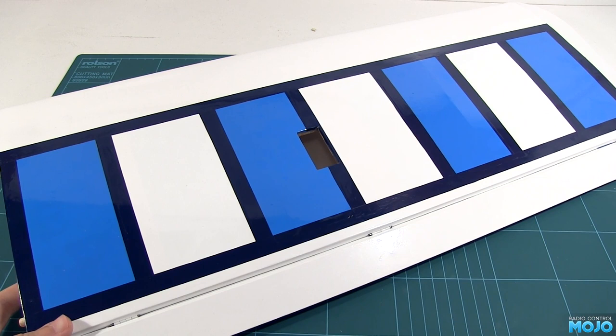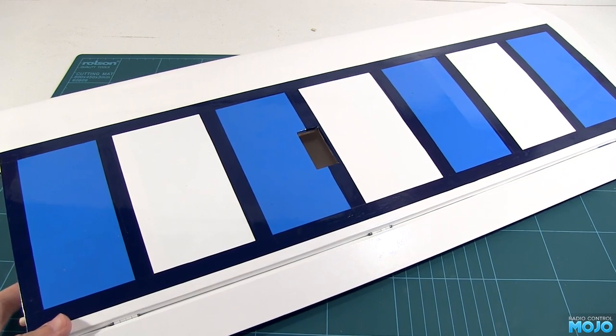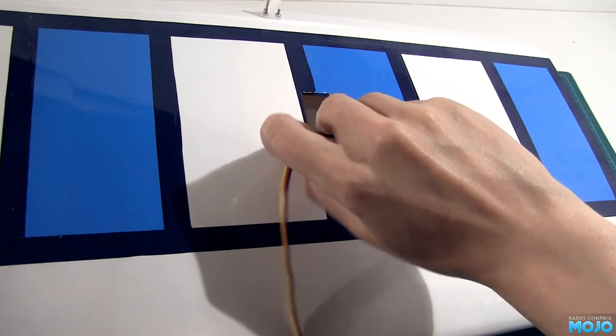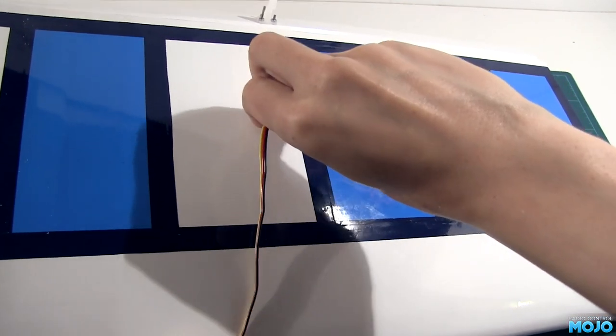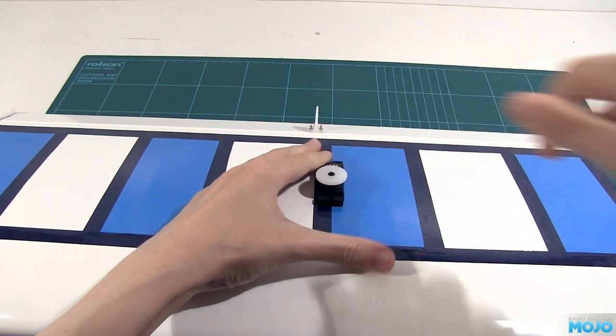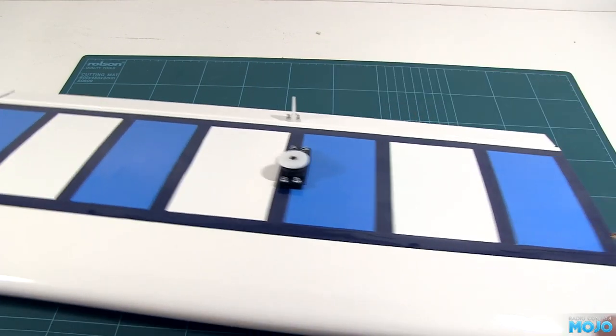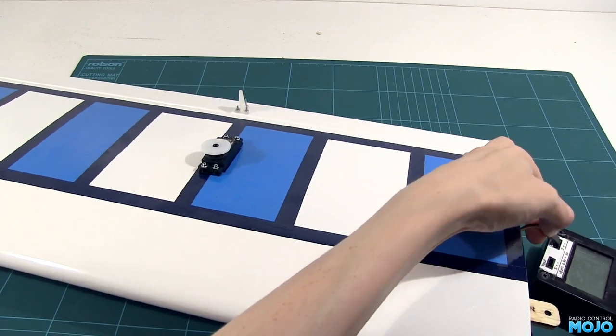Now the wings are covered, we need to fit the aileron servo properly. We've already done a dry fit, so the holes are all there ready for the screws. We just need to feed the wire down the tube, drop the servo in, and install the four screws. The servo needs to be centered. A servo tester is a good thing to use here.